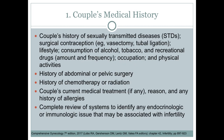We also ask about the couple's history of sexually transmitted diseases, about surgical contraception done in the past, their lifestyle — whether they consume alcohol, smoke tobacco, and do recreational drugs — their occupation, and physical activities. We also ask the female partner about history of abdominal or pelvic surgery, chemotherapy or radiation, current medical treatment and the reason for it, any history of allergies, and we do a complete review of systems to identify any endocrinologic or immunologic issues that may be associated with infertility.